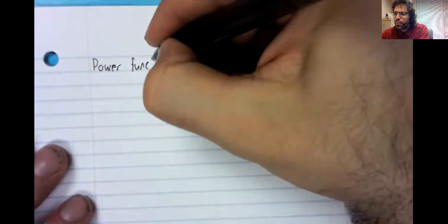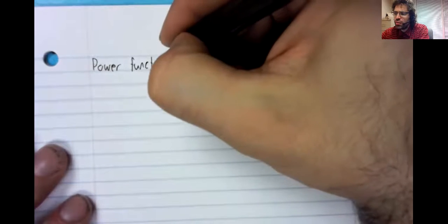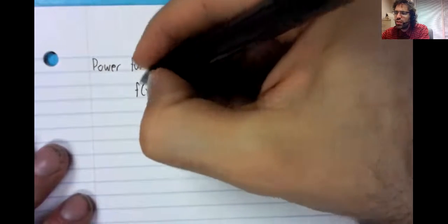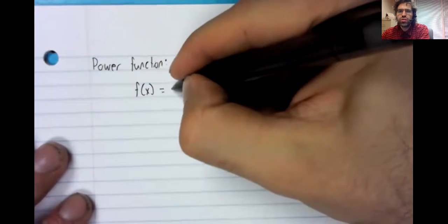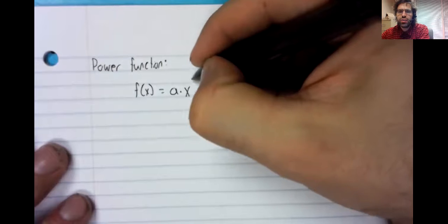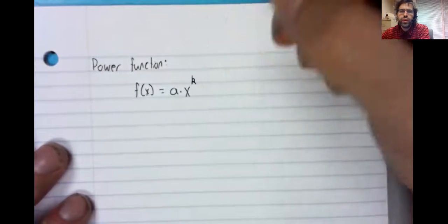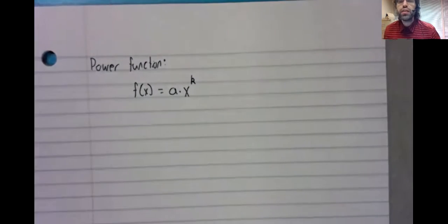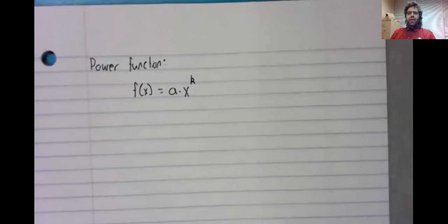A power function has the form f of x equals some number a times x to the power of k, where a and k can be anything.